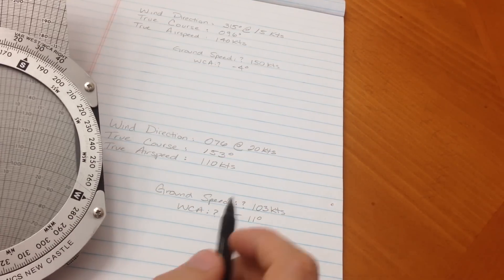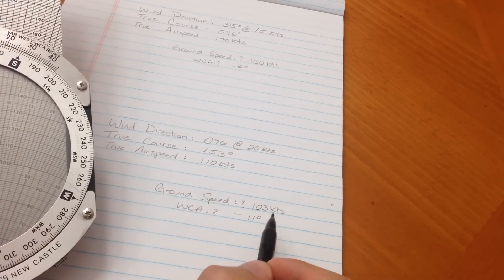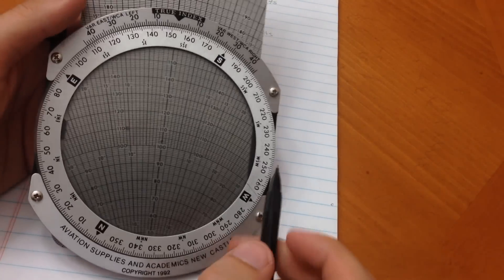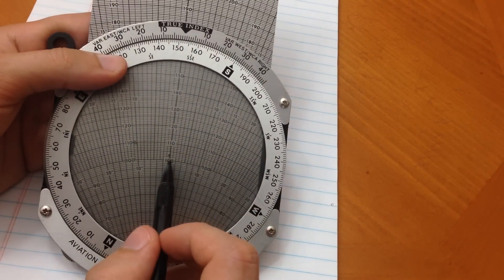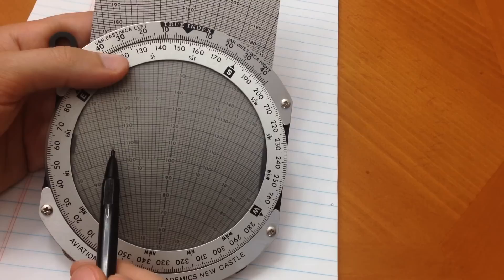For this example, I found that ground speed was 103 knots, and our wind correction angle was negative 11 degrees. And you can find them here, 103 knots, and here's our wind correction angle towards the left.